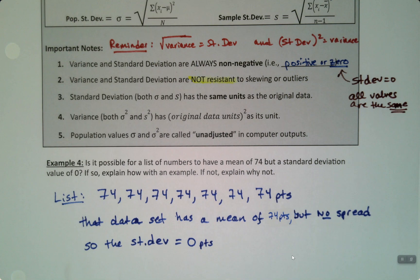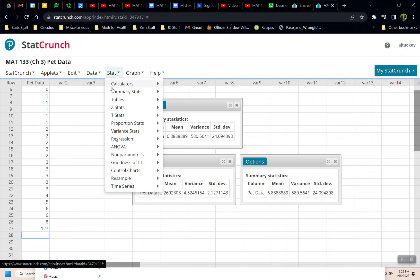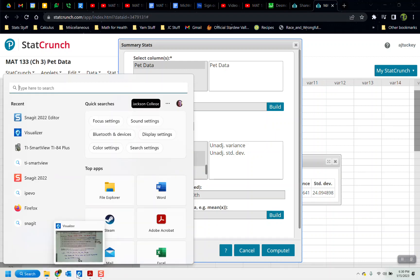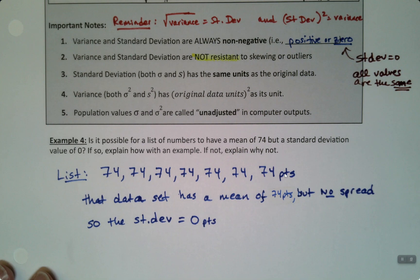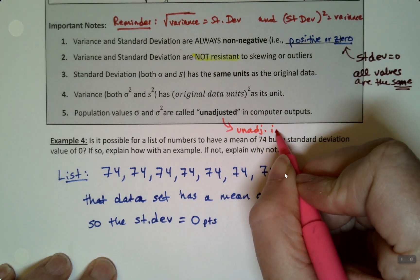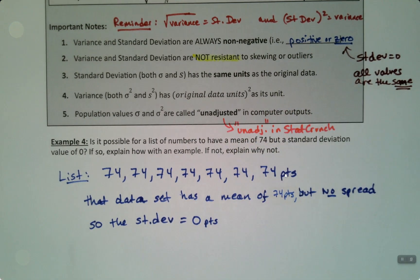And then never forget that the population values are the unadjusted ones in the computer output. So if I'm in here and I go to Options, Edits, or if I, Stat, Summary Stat, Columns, the population values are the ones that are down here, the unadjusted values. Those are the population values. We've already seen that before, but it's just a reminder that those are the population values. It actually calls them unadjusted.